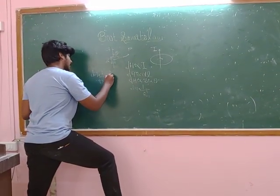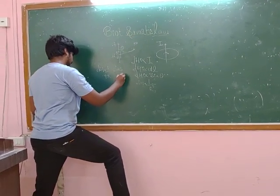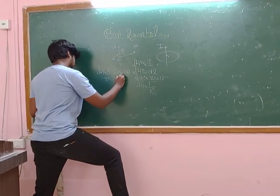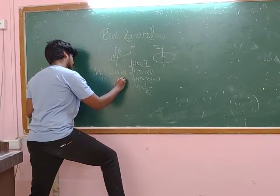So, the equation becomes dB equals μ₀ by 4π times I dL sine theta over r squared.